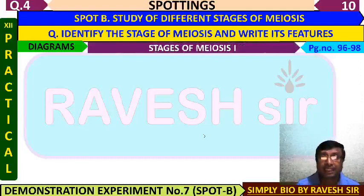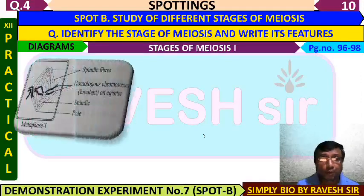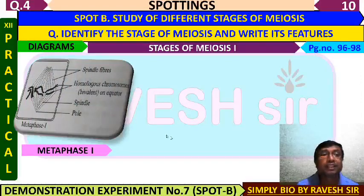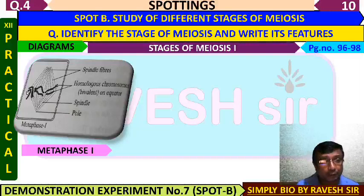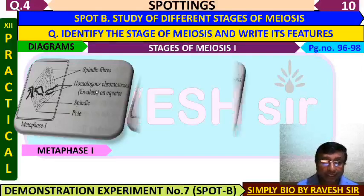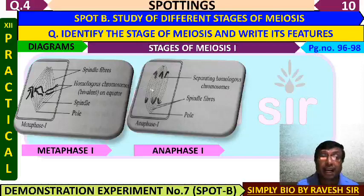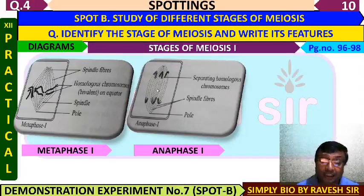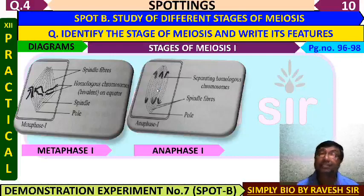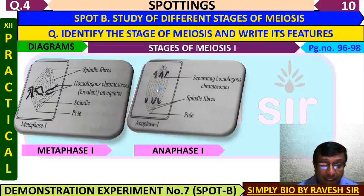The remaining stages of meiosis 1 are Metaphase 1, where homologous chromosomes arrange on the equatorial plate, and Anaphase 1, where homologous chromosomes separate and move to opposite poles.